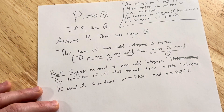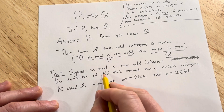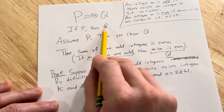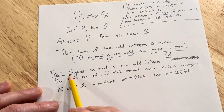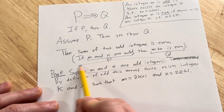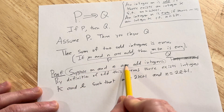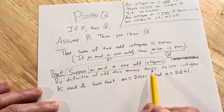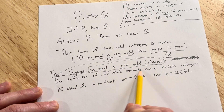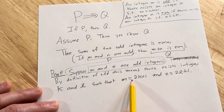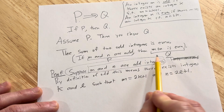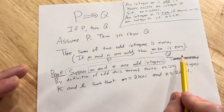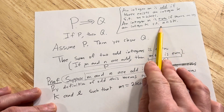We assumed P was true — to prove a P implies Q statement, we assume P is true and show Q is true. This is our assumption: M and N are odd integers. By definition of odd, there exist integers K and L such that we can write them that way. Now we look at the sum M plus N — we have to show it's even, meaning it's a multiple of 2.